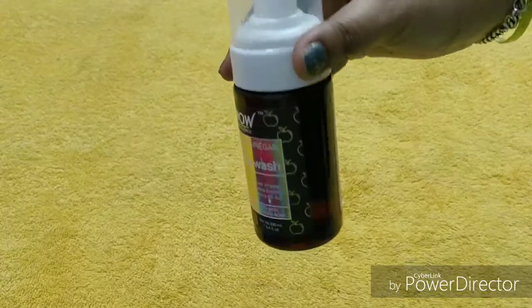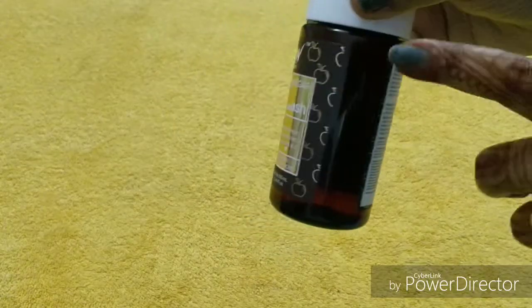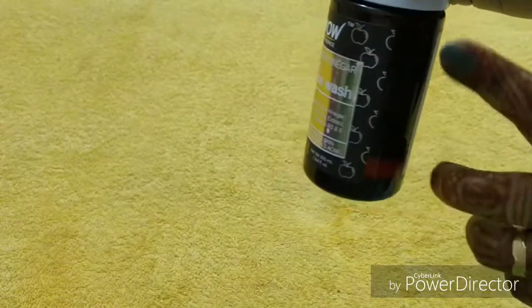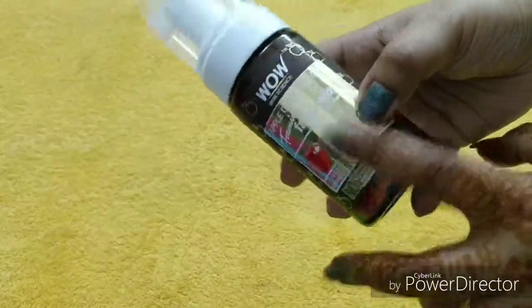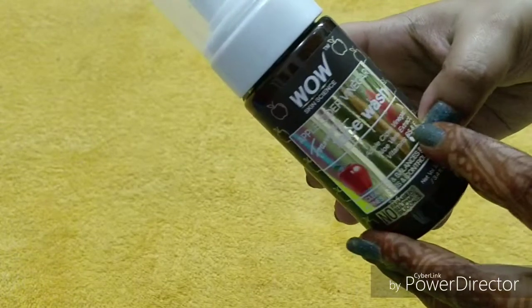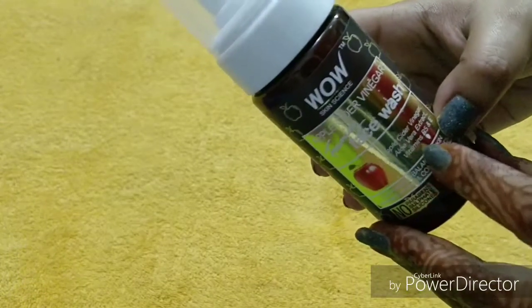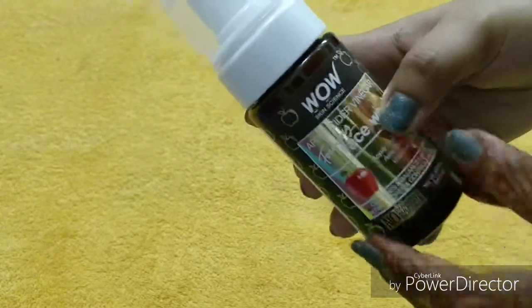Here you'll see the product, but when you shake it, it comes in a foaming form. Its name is Foaming Face Wash, and this contains apple cider vinegar, aloe vera extract, vitamin B5, and vitamin E.